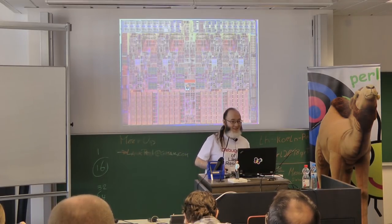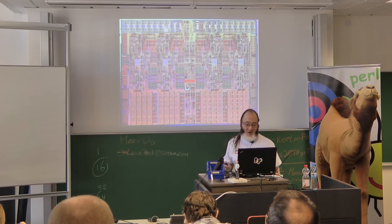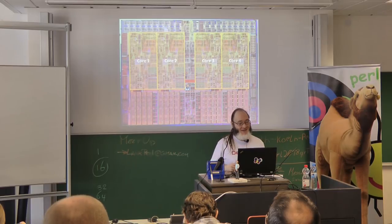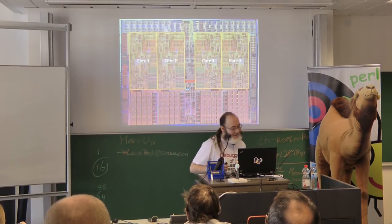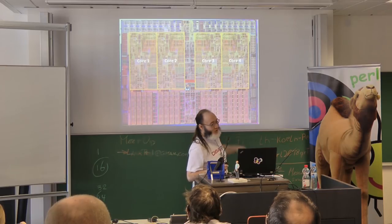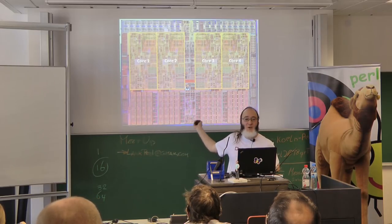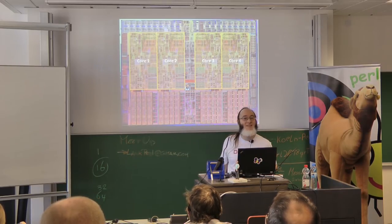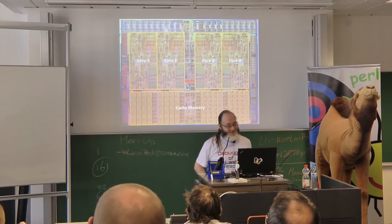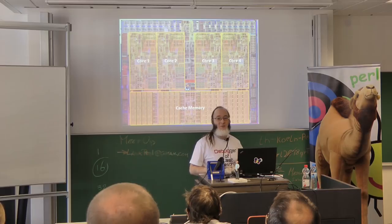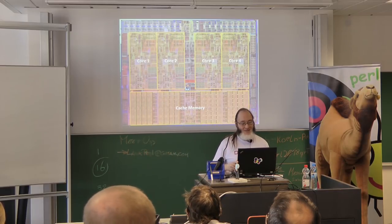Here's a CPU — an i7, quad core. You can see the four copy-pasted bits there. They flipped a couple of them for faster interconnect and so on. What's all that chunk of stuff at the bottom taking up loads of space? Cache memory. And actually each of those cores also has cache memory as well. I'll talk a bit more about that in a moment.